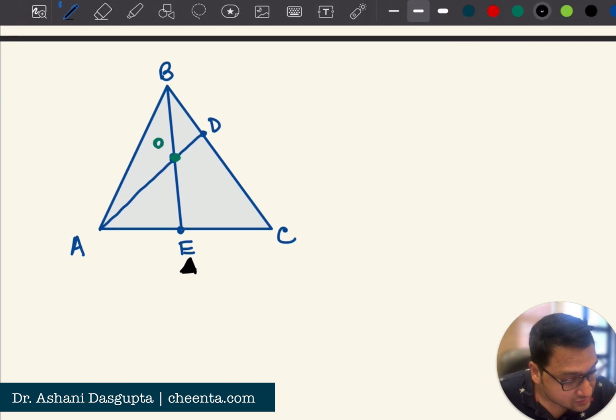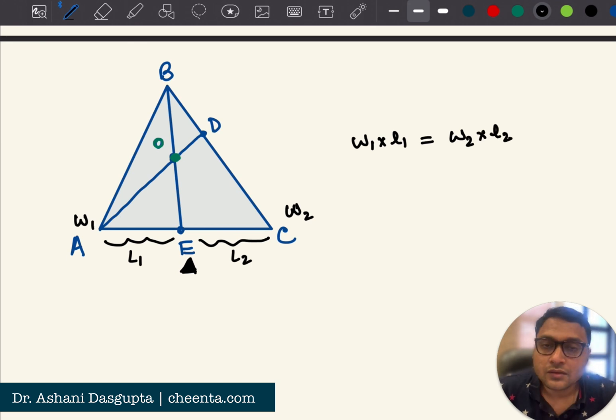The weight, so let's call this one length 1 and length 2, and this one as weight 1 and weight 2, right? So, weight 1 into length 1 should be equal to weight 2 into length 2. So that's the simple principle of levers in some sense. So, since length 1 and length 2 are equal in this particular case,